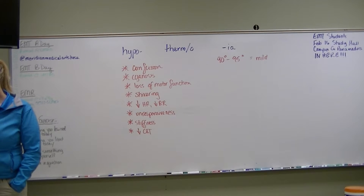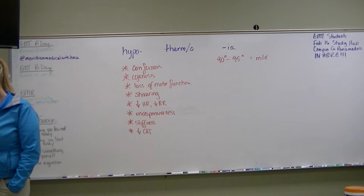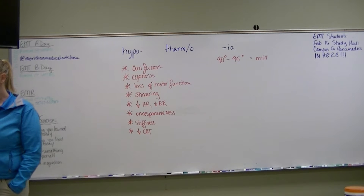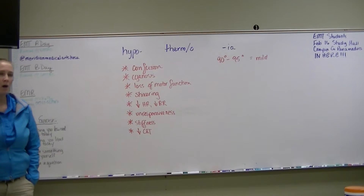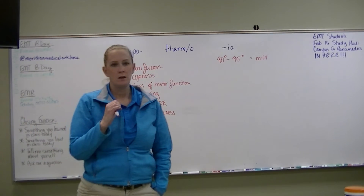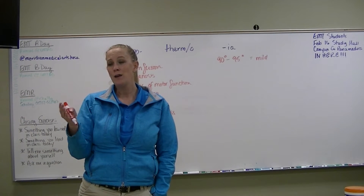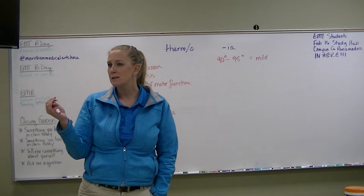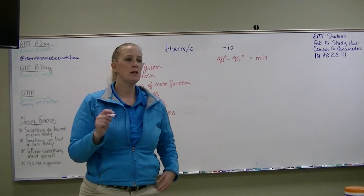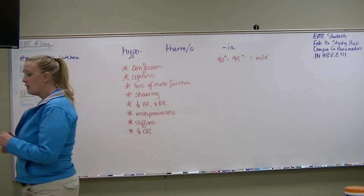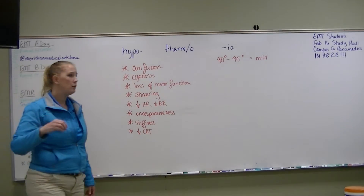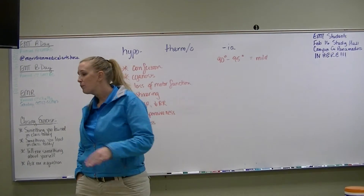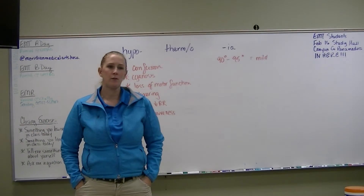Looking at table 32-1, it gives signs and symptoms at each different temperature, but those are all person-specific. If your normal body temperature runs at 99, you might start suffering signs of mild hypothermia when your temperature gets to 96. Rather than counting on core temperature alone, you should learn the signs and symptoms of hypothermia so you can figure out what's going on with your patient regardless of what their temperature is.